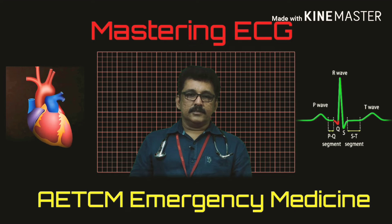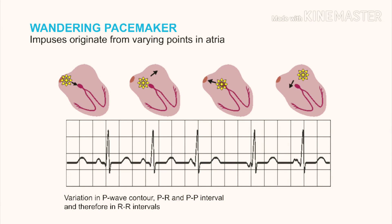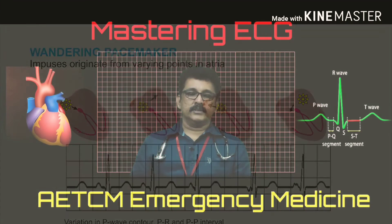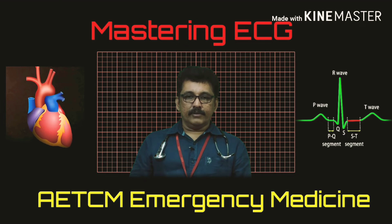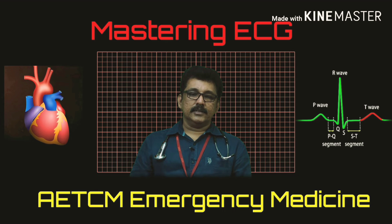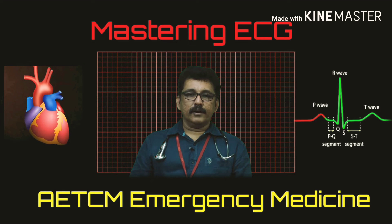This ECG shows a wandering pacemaker. You can see P-waves, but the morphology is different in each complex — the first, second, and third ECG complexes differ, and the fourth has inverted P-waves. Different morphological P-waves appear because the pacemaker varies from beat to beat — sometimes originating from the SA node, sometimes from the left atrium, and sometimes from the junction, causing a negative P-wave.